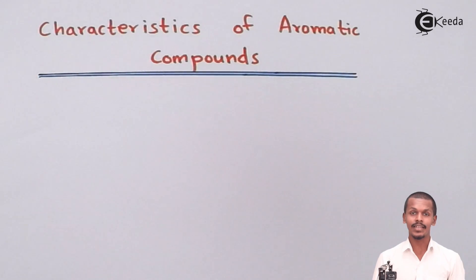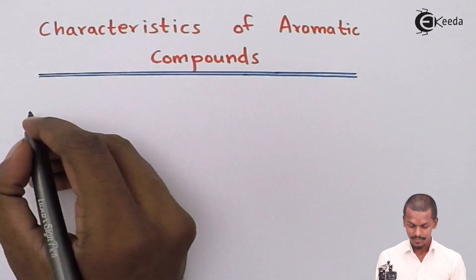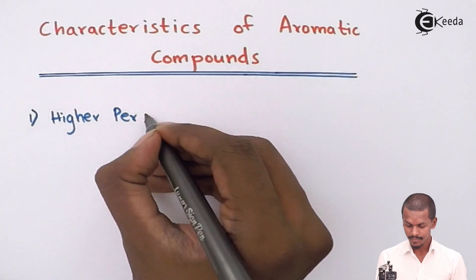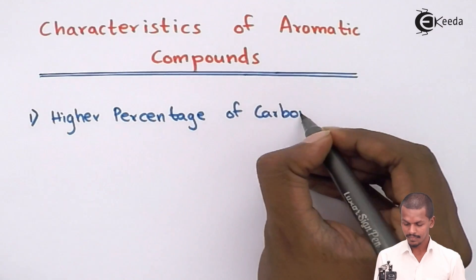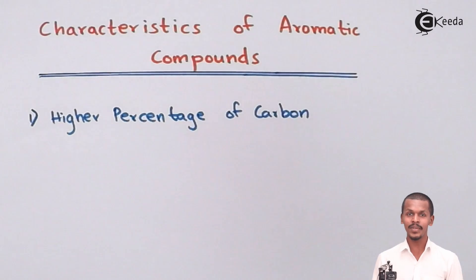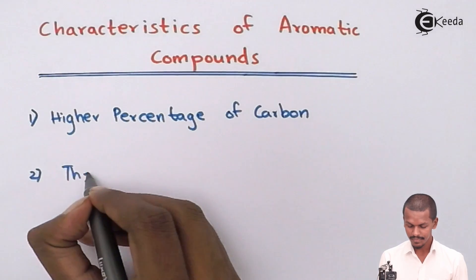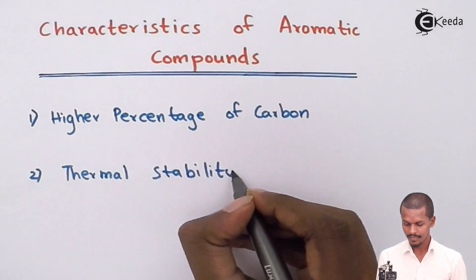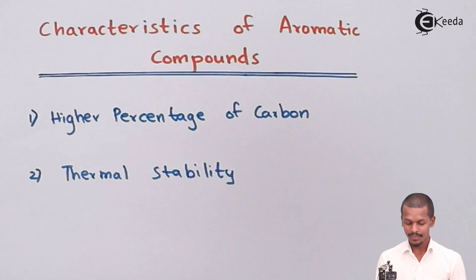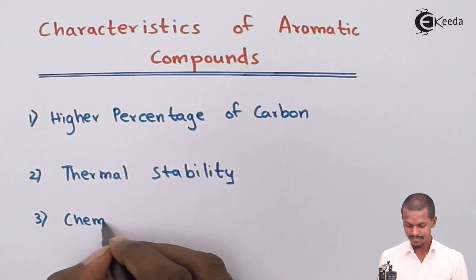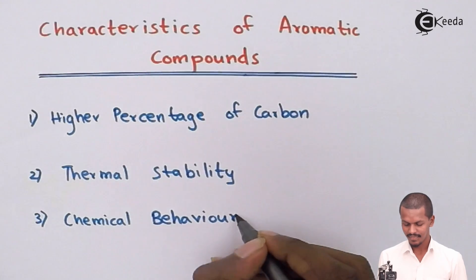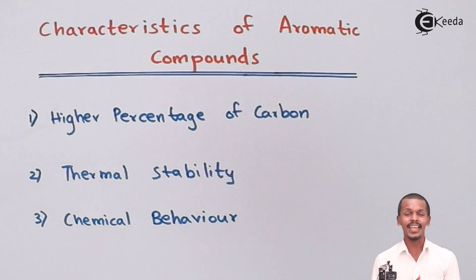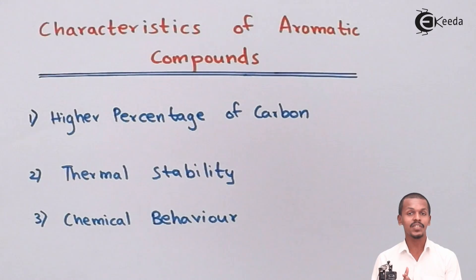There are basically three characteristics for which an aromatic compound is known. The first one is higher percentage of carbon, the second one is thermal stability, and the third one is chemical behavior. These are the three main characteristics of aromatic compounds. Starting with the first one — higher percentage of carbon — we are going to do a very deep analysis.